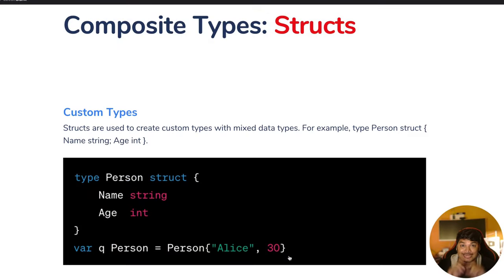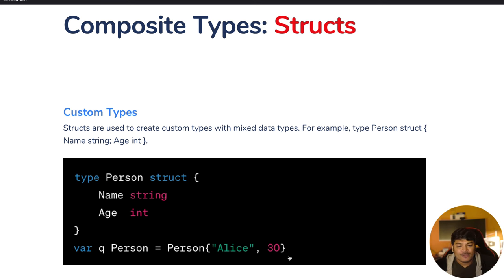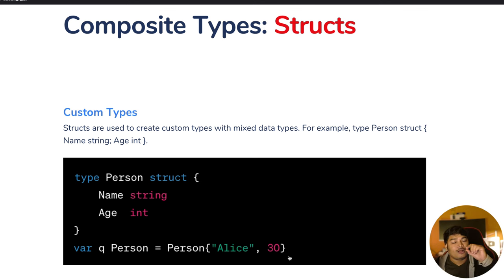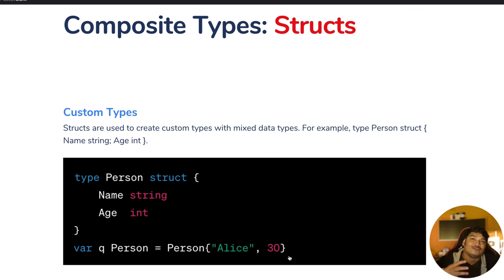Now let's learn about structs — a very important topic. A struct is a custom data type with mixed data types. For example, a type 'Person' could have attributes: name (string), age (integer), and address. We're creating a new data type called Person with meaningful attributes of different data types. Let me show a quick demo.